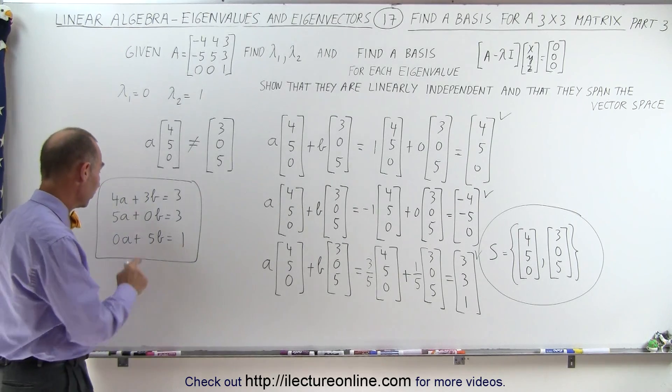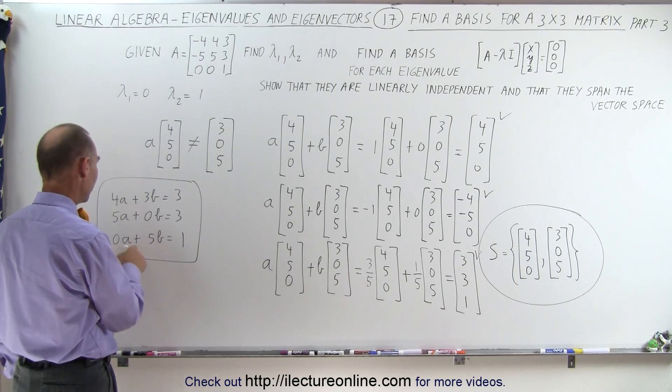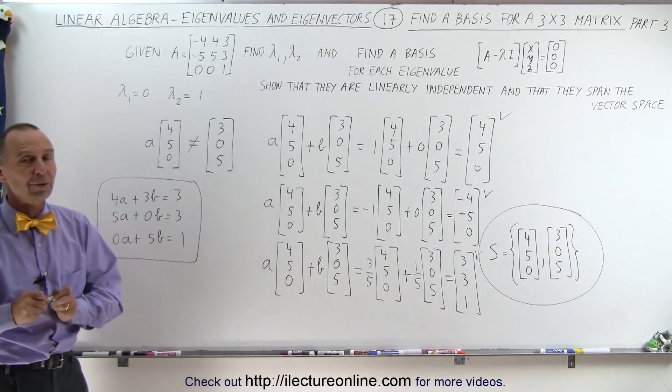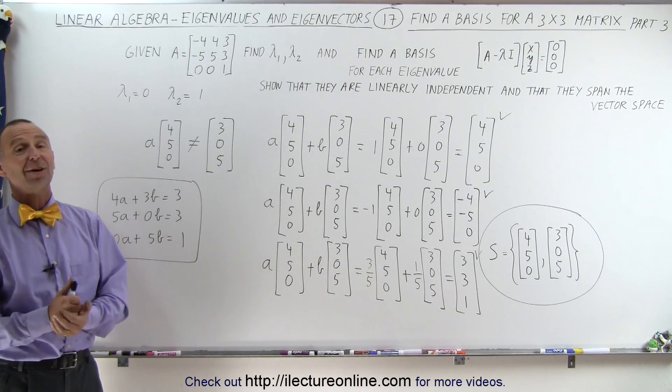And it's actually not that hard because, first of all, you realize that here you have 0b, so a is 3/5. And here you have 0a, so b must be 1/5. And so it's not that hard to show that they do indeed span the vector space. And that's how it's done.